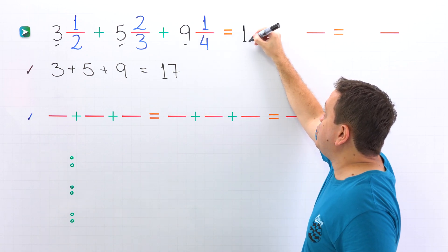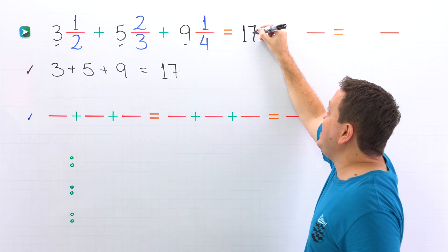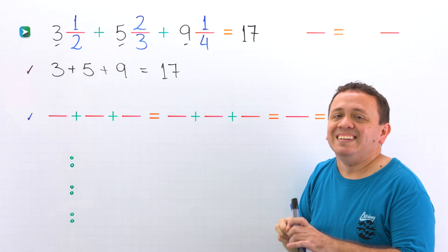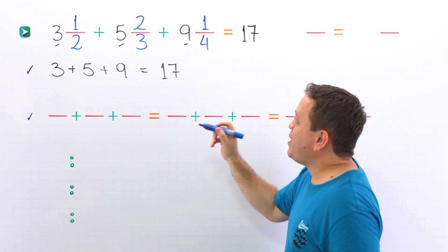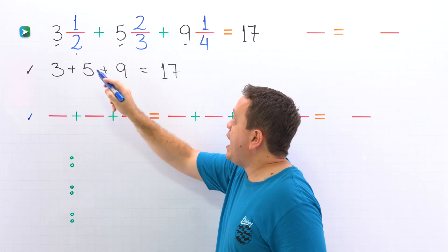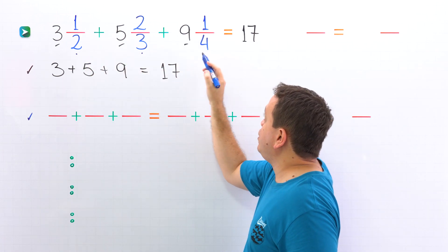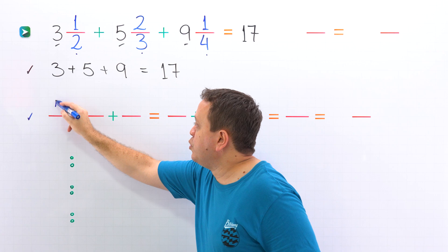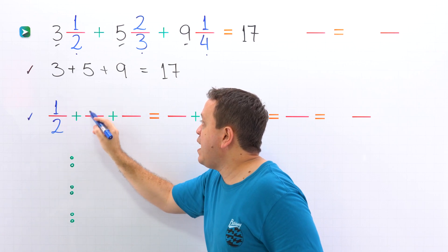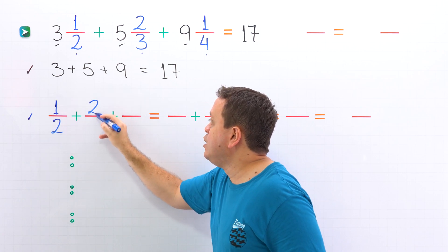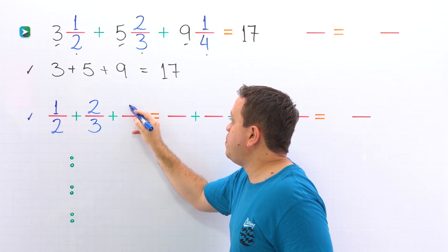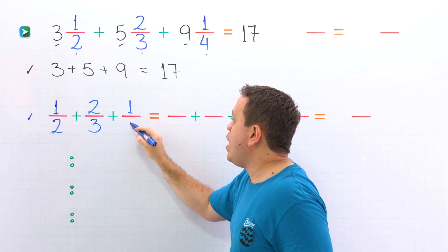Next, we put seventeen in the answer — we have the sum of the whole numbers. It's time to add the fractions. The fractions are one half, two thirds, and one fourth. So we set up one half plus two thirds plus one fourth.